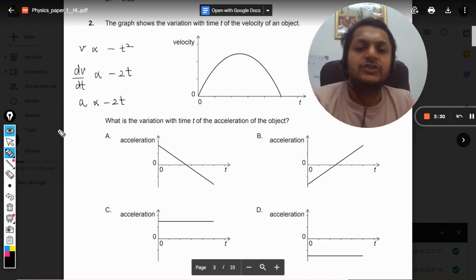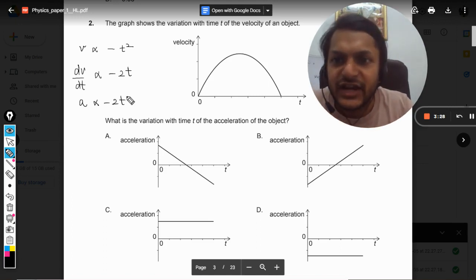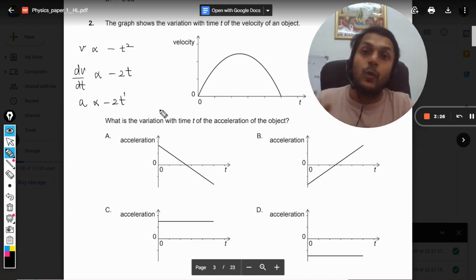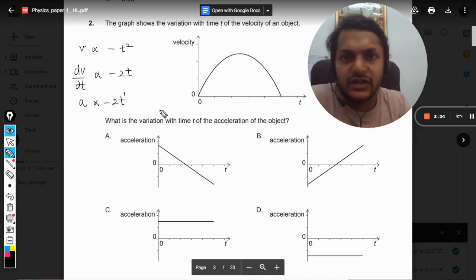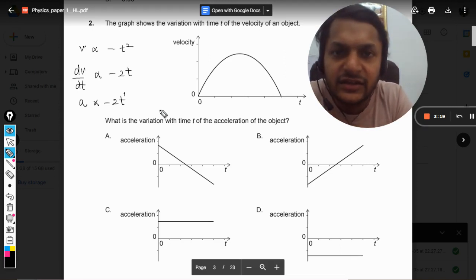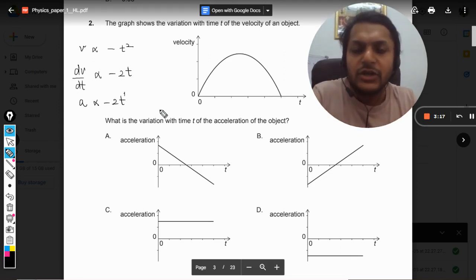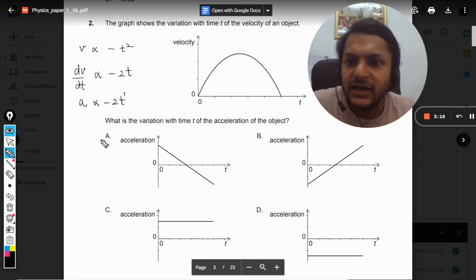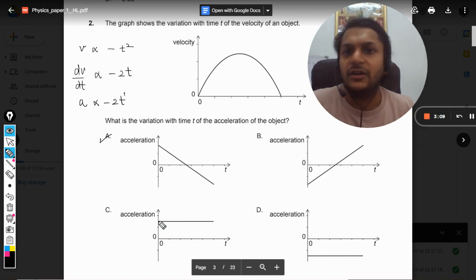So acceleration is directly proportional to -2t. As you can see, acceleration is directly proportional to t raised to power 1, so it will be linear. The graph will be linear in its type, and because there is a negative sign there, it is having a negative slope. So very clearly A will be the answer. In B you have positive slope, in D you do not have a slope, and in C you do not have a slope. So B, C, and D are wrong, and A is absolutely correct.